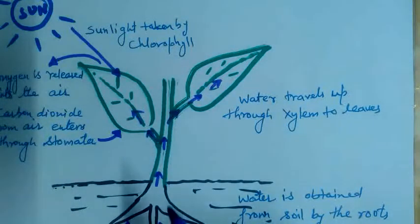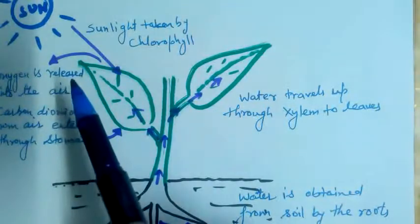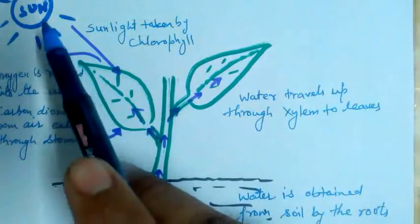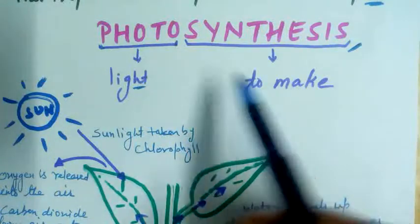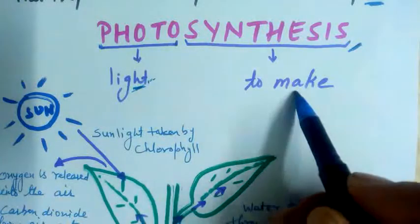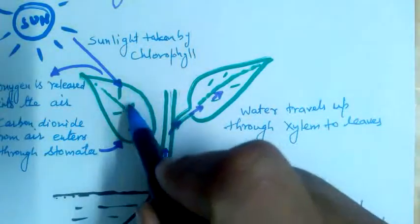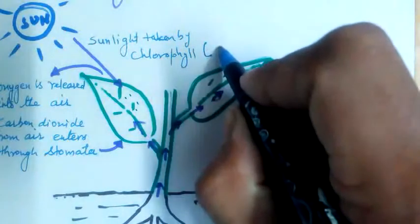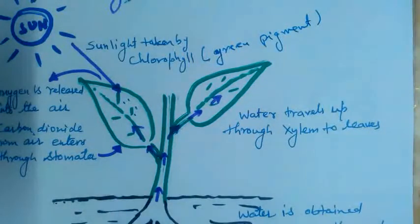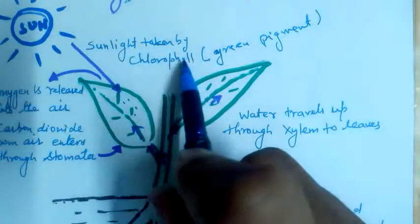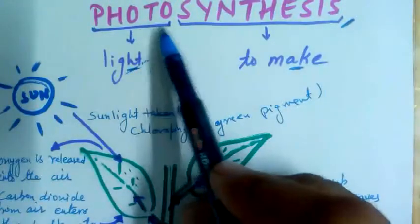So, here is a plant. There are three necessary conditions to carry out photosynthesis. The first is sunlight. Photo means the process is carried out in the presence of light to make food. Sunlight is absorbed by chlorophyll. In the leaves of plants, chlorophyll is a green pigment. The function of chlorophyll is to absorb sunlight and help carry out the photosynthesis process.